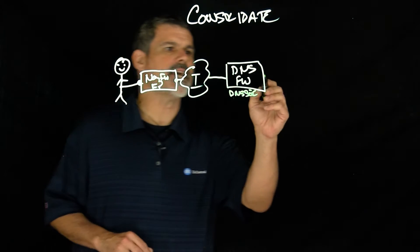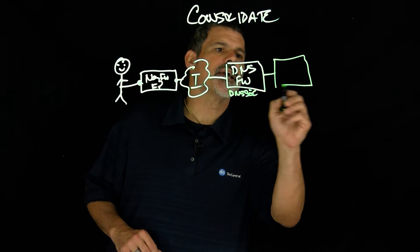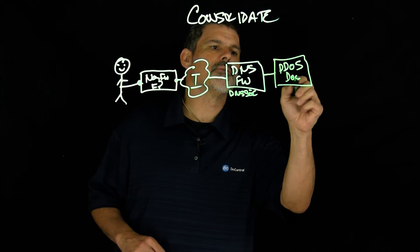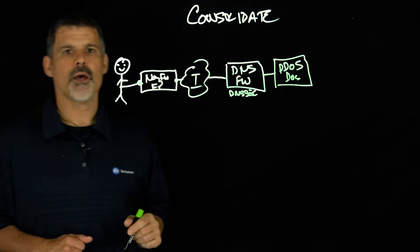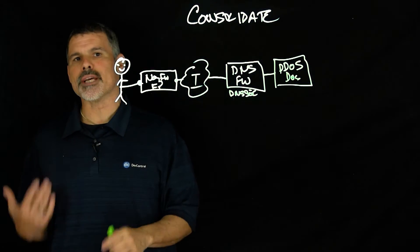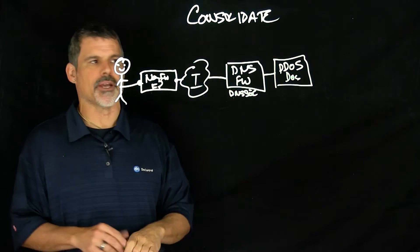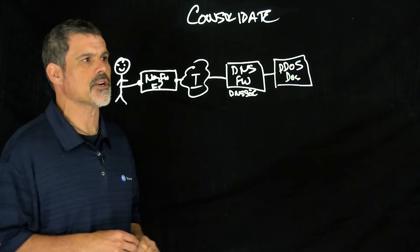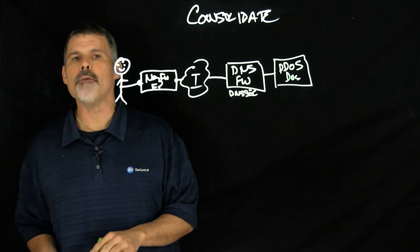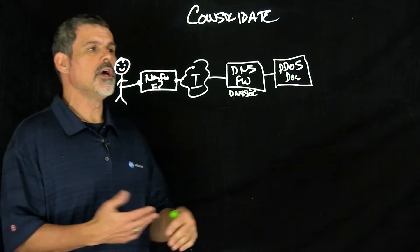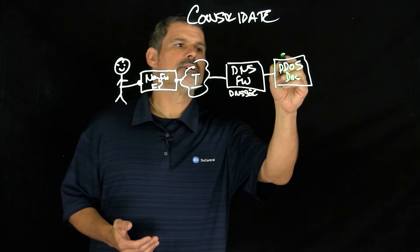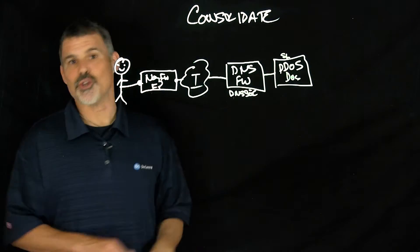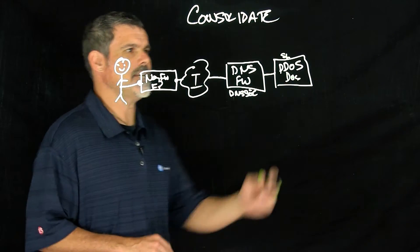Next would be things like distributed denial of service or regular denial of service. With the increase of volumetric attacks, there's no stopping denial of service attacks. You can protect your infrastructure from DDoS attacks on the BIG-IP platform, or use Silverline services and send those requests out to the cloud.